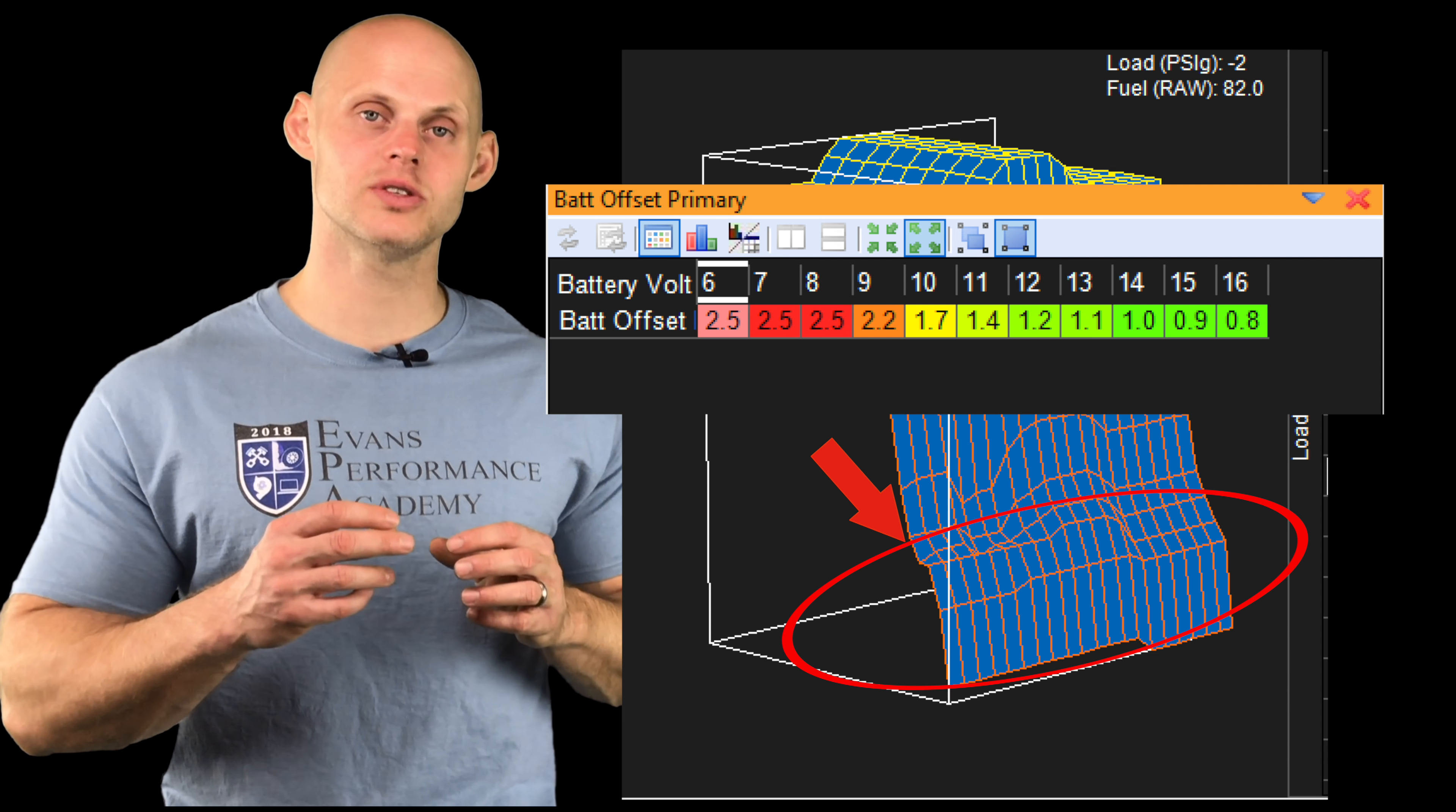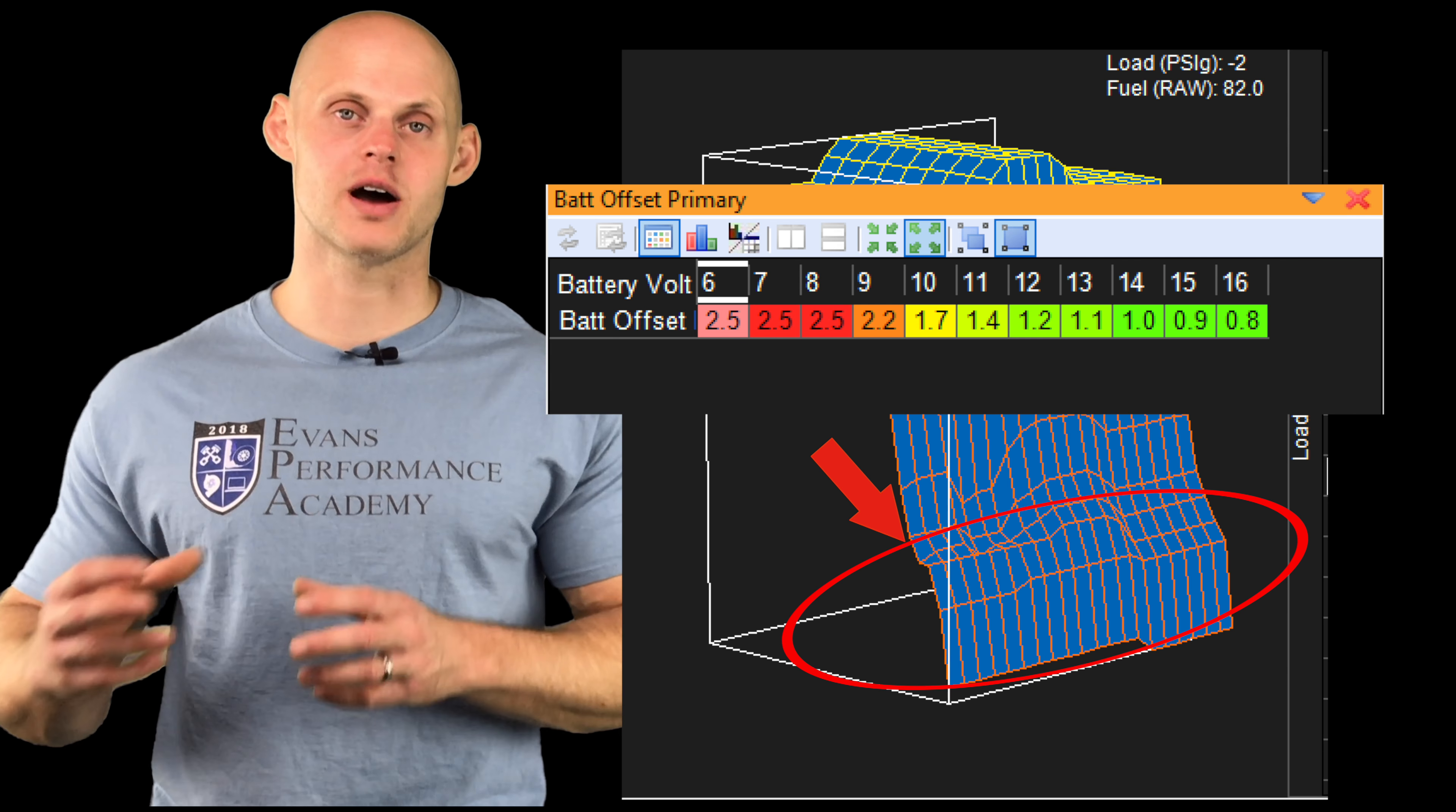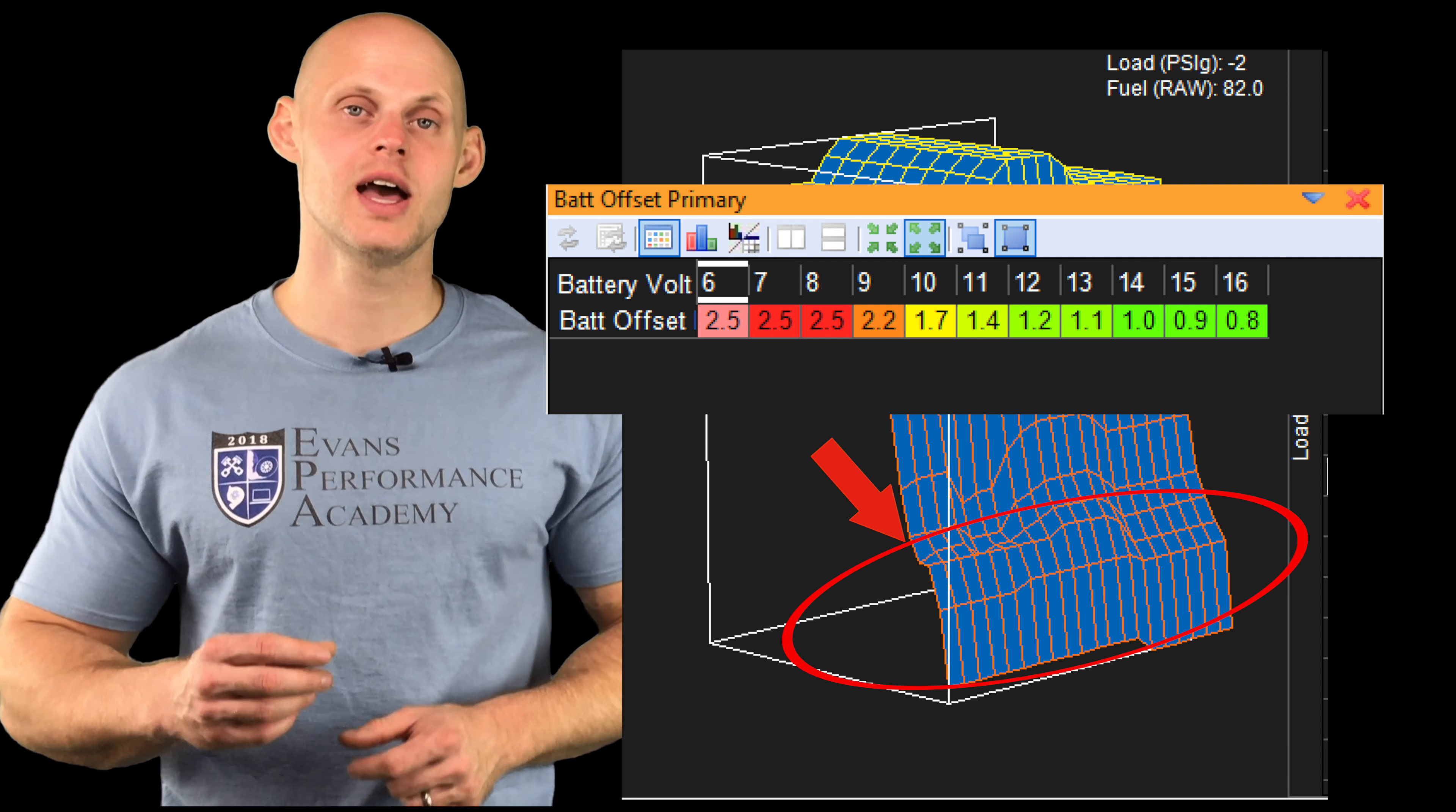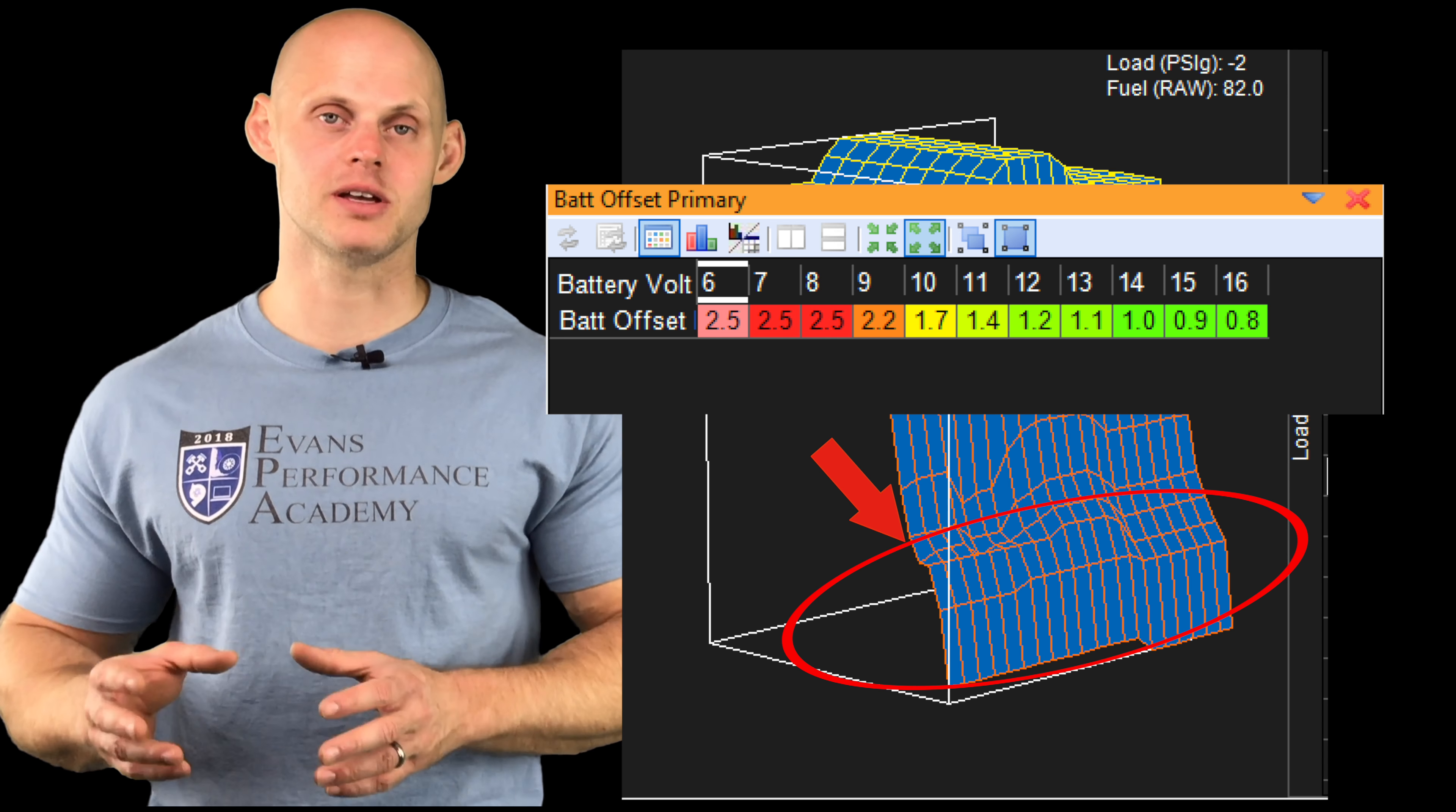Therefore, the values in our injector dead time table are going to have more an effect on those areas of operation because we're going to have a lower pulse width and a little change in pulse width is going to be a big change in fuel delivery in this time-based model. We're going to see that we have to skew up the table.